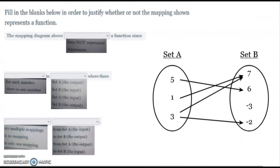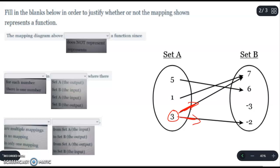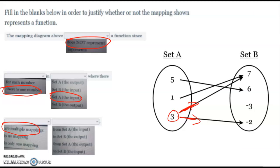We look here, we see here at three—you've got two lines coming from three. So it's not a function. So it does not represent a function because there is one number from Set A, the input, there are multiple mappings going into Set B, the output. And that's it. That's how you answer those questions there.